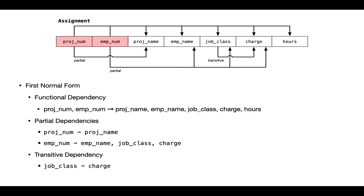I've shown that in the diagram below the attribute list: project number determines project name. Because this dependency arrow is not using all of the fields in the key, I've marked it as a partial dependency. Similarly, the employee number would allow us to determine the employee name, the employee's job class, and the rate being charged to customers. I've got another partial dependency arrow marked partial that goes from just employee number to those three attributes in the first normal form version of these data.